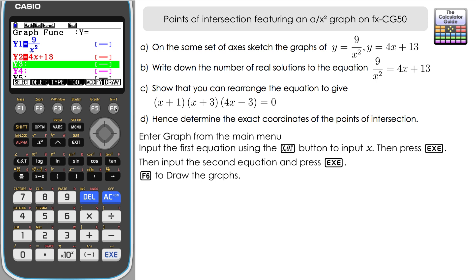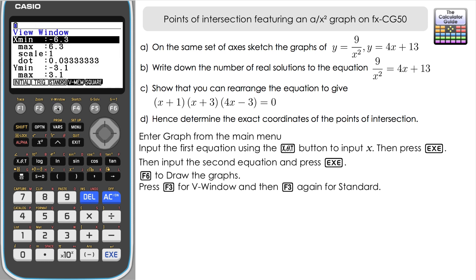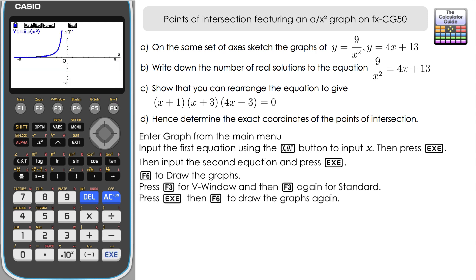Now if your graph is on the default setting you might not see very much, so press F3 (V-Window) and then F3 again to switch to the standard layout — that sets both x and y axes from negative 10 to positive 10. Press Execute to return to the menu screen, then F6 to draw again.